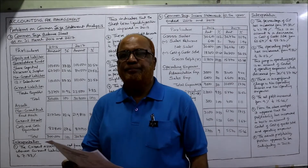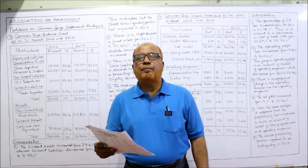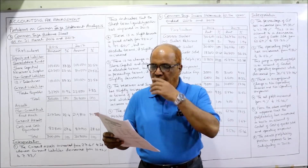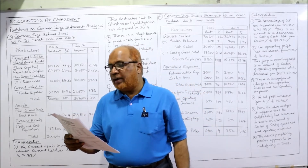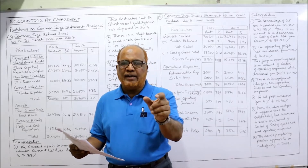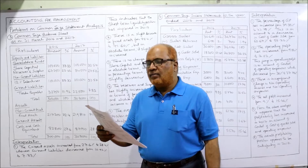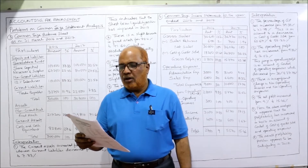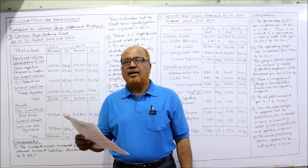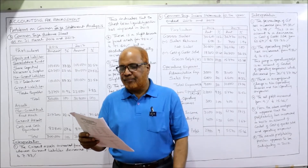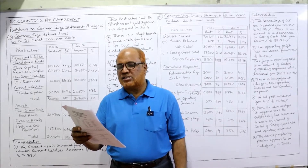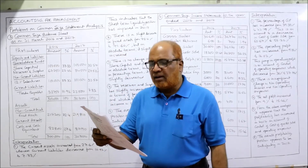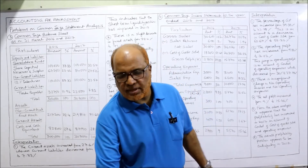Problem number 3: prepare a common size statement and interpret the result — not only do you have to make the statement, but also provide interpretation comments. A balance sheet is given as on 31st March 2017 and 2016. The particulars include equity and liabilities: shareholders' fund (share capital, reserves and surplus), non-current liability (12% debentures), and current liability (trade payable). Assets include non-current assets (fixed assets) and current assets (cash and cash equivalents).